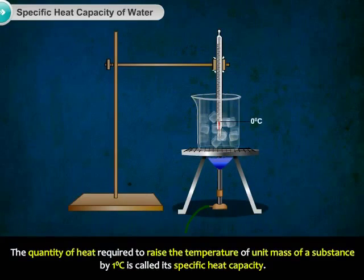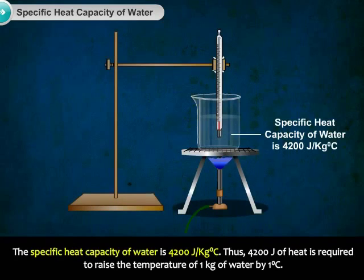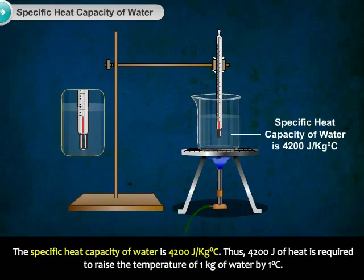The quantity of heat required to raise the temperature of unit mass of a substance by 1 degree Celsius is called its specific heat capacity. The specific heat capacity of water is 4200 joule per kilogram degree Celsius. Thus, 4200 joule of heat is required to raise the temperature of 1 kilogram of water by 1 degree Celsius.